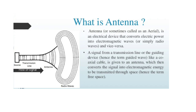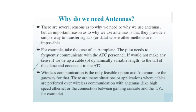An antenna is an electrical device. It converts electric power into electromagnetic waves. We use a coaxial cable to transmit the signal in space. In the case of an aeroplane, we are able to communicate with the pilot using wireless communication.